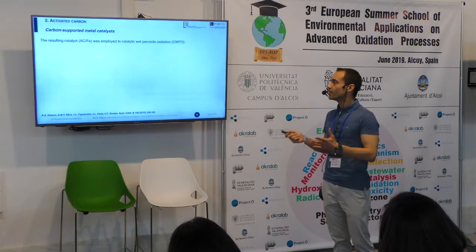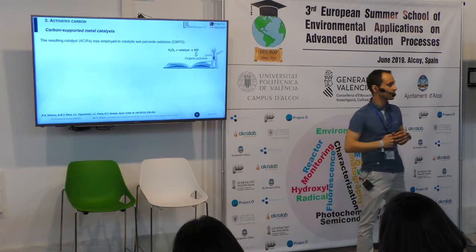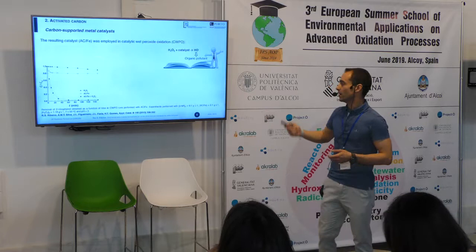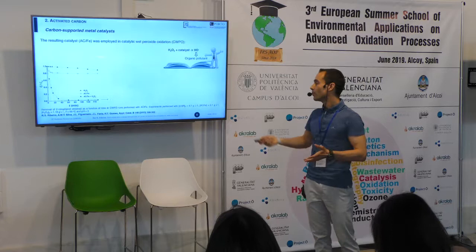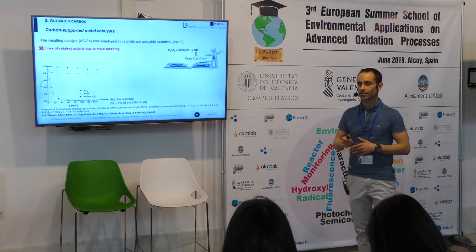The resulting catalyst was employed in catalytic wet peroxide oxidation, which briefly is an advanced oxidation process employing hydrogen peroxide as oxidation source and a suitable heterogeneous catalyst to promote its decomposition via hydroxyl radical formation. As expected, the material was very active for this process. However, very large amounts of iron were leached into the treated water — this is indeed the most common drawback of this kind of catalyst.